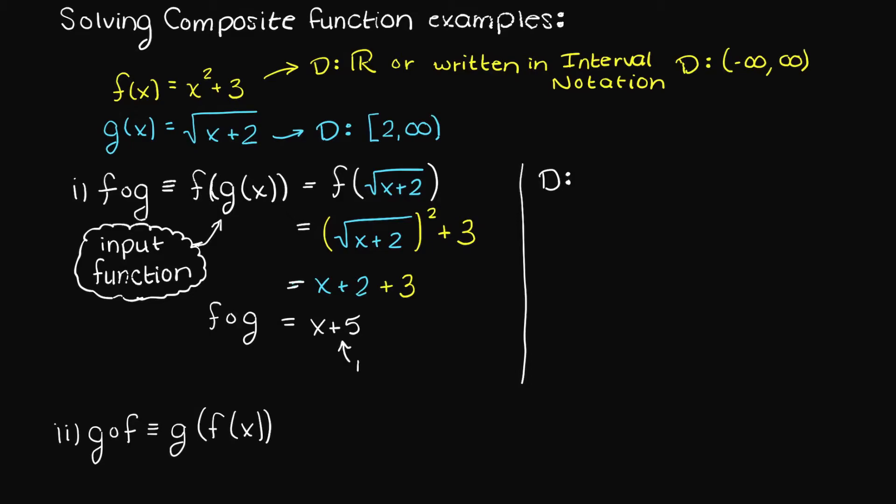We already know the domain of g of x is all values of x greater than or equal to negative 2. And since the composite function is simply x plus 5, there are no new restrictions placed on us. Therefore, the domain of f of g of x is all real numbers greater than or equal to negative 2.